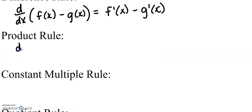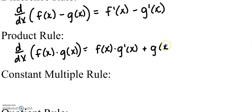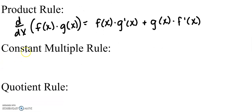The product rule has a little bit more to it. f(x) times g(x) is going to be equal to the first function times the derivative of the second function, plus the second function times the derivative of the first function. There's a geometric way to see that — you can watch another video to understand where the product rule comes from.